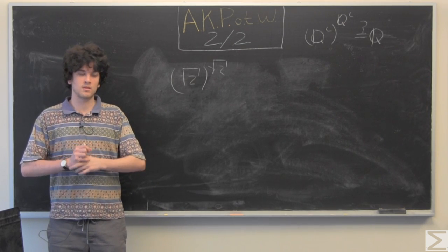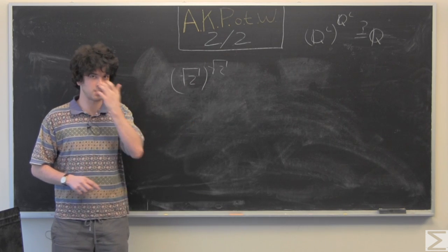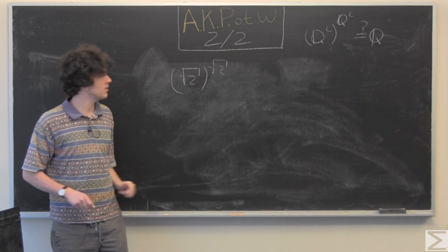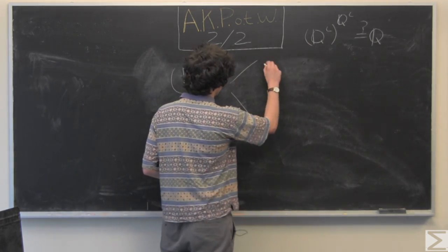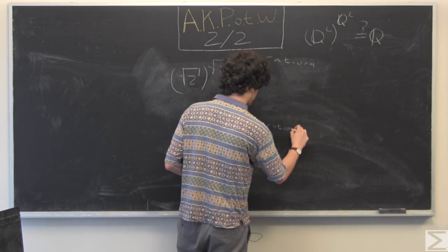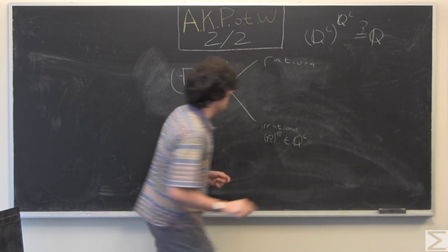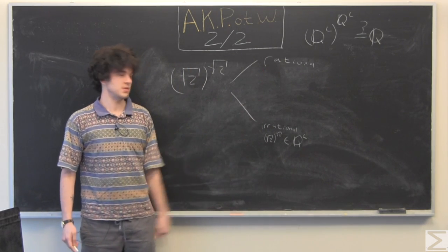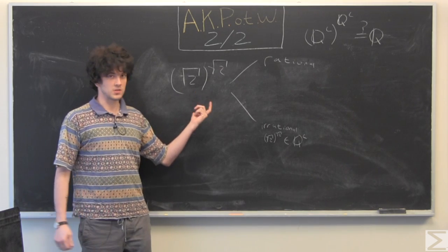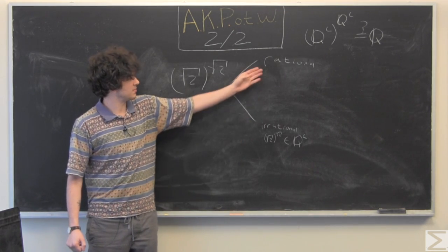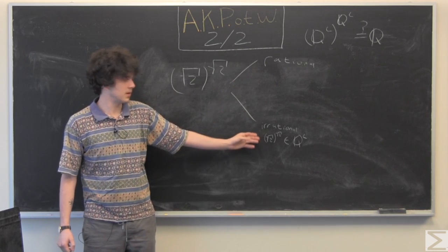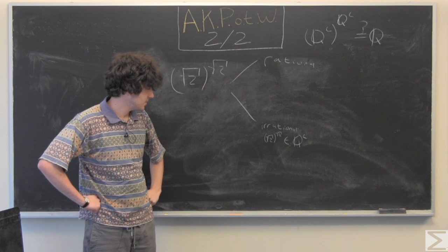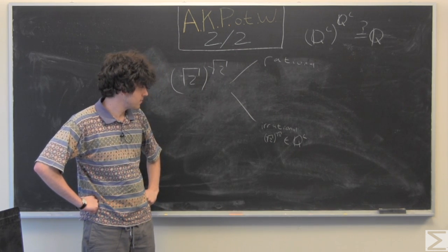Without a calculator, and even with a calculator, it would just give you an approximation of this. Without a calculator, we can't really say much about what this is. We can say that the answer will either be rational or irrational, since the answer is obviously going to be real, so it has to fall into an irrational or rational set.